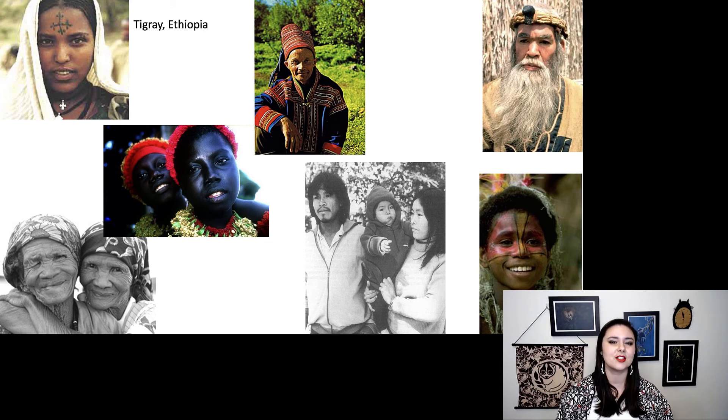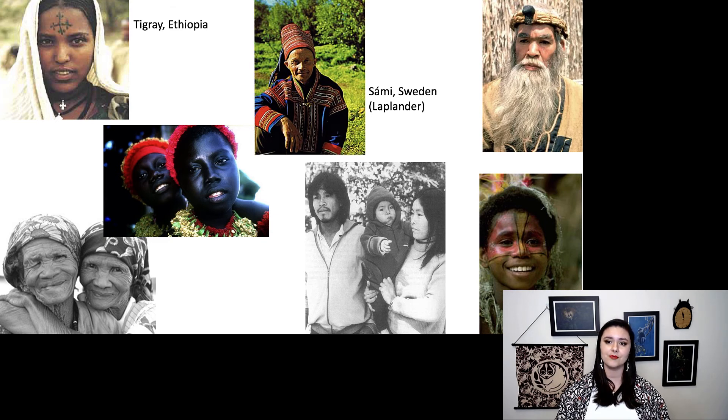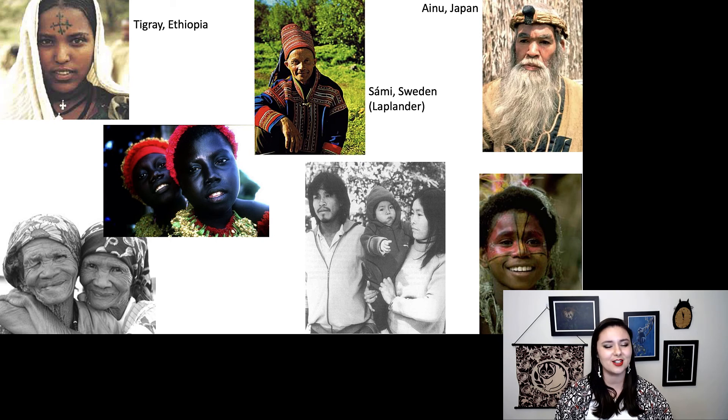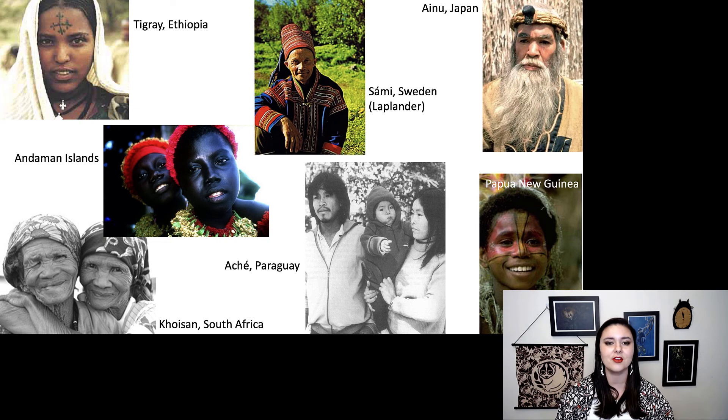This lady is from Ethiopia. He is actually from Sweden. He is a Sami or a Lachlonder, the only indigenous or hunter-gatherer group left in Europe. This man with his glorious beard, he's an Ainu from the northern island of Japan, Hokkaido. She is from Papua New Guinea. This family here is from Paraguay. They are Khoisan from South Africa. And these ladies are from the Andaman Islands.